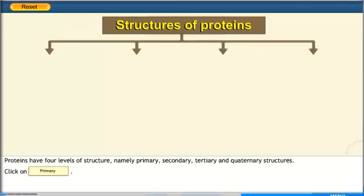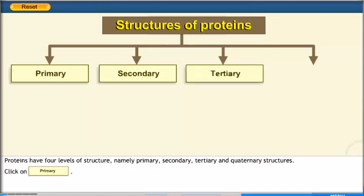Proteins have four levels of structure, namely primary, secondary, tertiary, and quaternary structures. Click on the primary button.